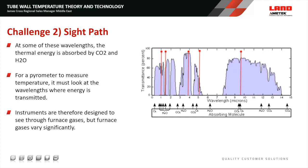The second challenge is the sight path. At some wavelengths, thermal energy emitted from tube walls is absorbed by CO2 and H2O. We need to ensure our pyrometer is operating in what we call an absorption window. If we do that, none of the energy emitted from the tube wall is absorbed by H2O or CO2, giving us good transmittance and no errors caused by the atmosphere between the tube wall and the pyrometer.